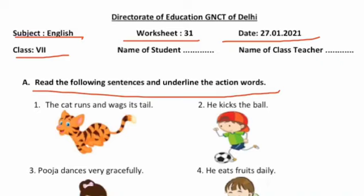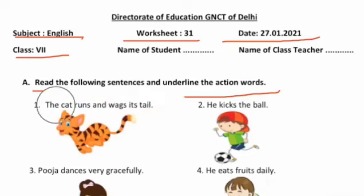Let's come to the first sentence: 'The cat runs and wags its tail.' Cat bhaagti hai aur apni pooch hilati hai — wagging karti hai tail ko. To is sentence mein cat ki dvara do action ho rahe hain: ek to bhaagne ka, aur doosra wagging karne ka — apni pooch ko hilane ka kaam ho raha hai. So action words kya ho gayi? Iske andar ho gayi 'runs' and 'wags'. You have to underline those words.